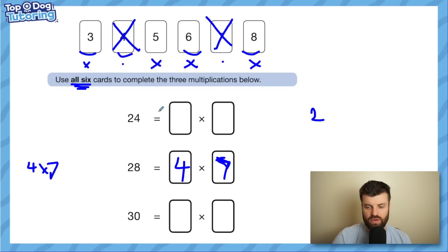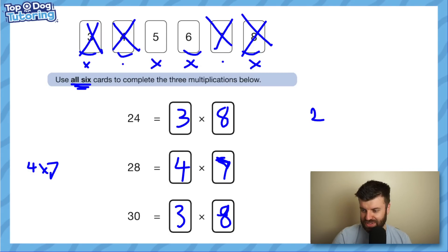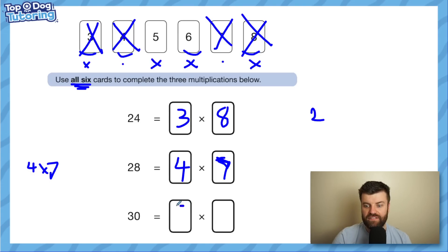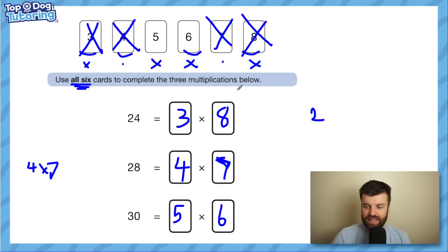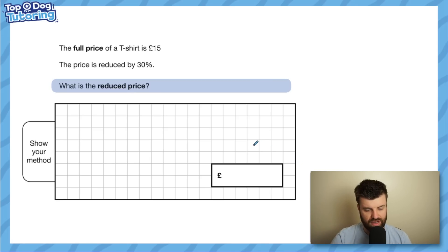So 4 times 7 gives me 28. Now 24 — the only option that works is 3 times 8. So I put that in, and it leaves me with 5 and 6. If you've been systematic — yes, 5 times 6 gives you 30. Make sure you get your eraser if you make a mistake in a test, because it's easy to write the wrong numbers down. The point is, if you rush in and just guess what goes here, you could block yourself out. So there's the technique: find the numbers with only one multiplication option first, and don't get it wrong.